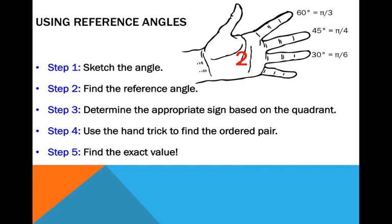Here is a drawing of the left hand. On your left hand, each finger represents an angle measurement. Your pinky is 0 degrees or 0 radians. Your ring finger is 30 degrees or pi over 6 radians. Your middle finger is 45 degrees or pi over 4 radians. Your index finger is 60 degrees or pi over 3 radians. And your thumb is 90 degrees or pi over 2 radians.